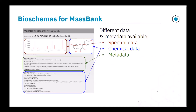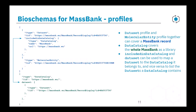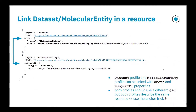This is what the MassBank website looks like: there is spectral data in both graphical and text form, chemical data again in graphical and text form, and metadata about the record itself. Within MassBank profiles we can make sure that one record is contained in a data catalog representing the entirety of MassBank. And this is something new from last year: we can say that a particular dataset or spectrum is about a molecular entity, and conversely that a molecular entity is the subject of a specific measured spectrum.